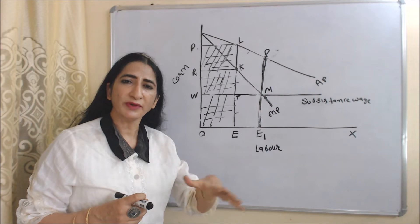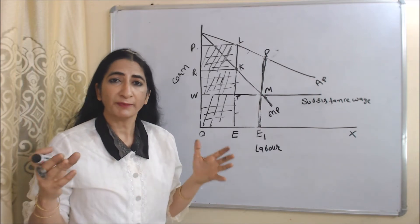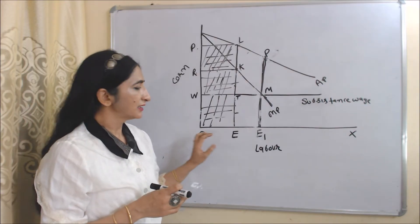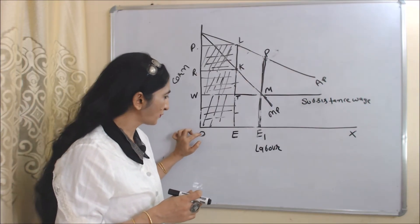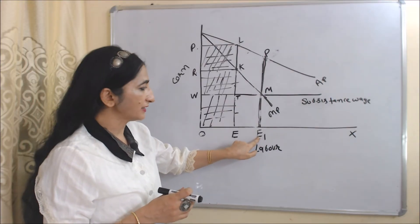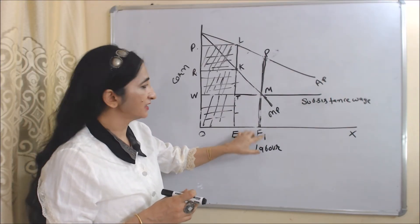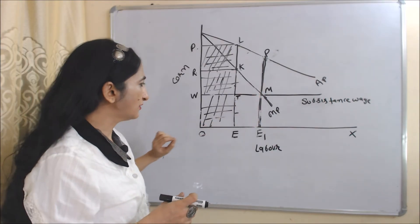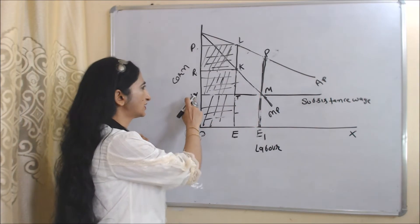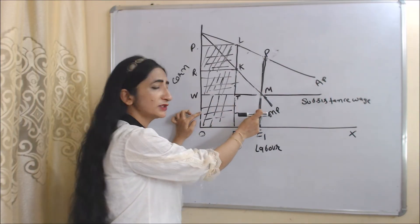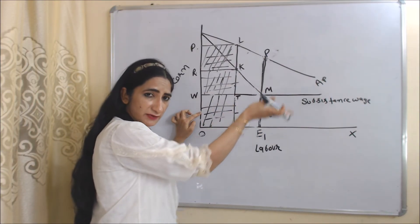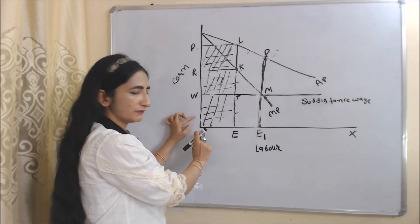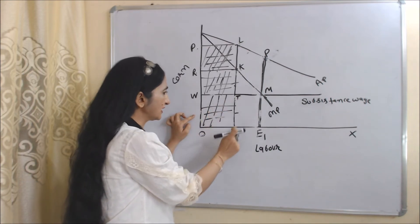But as economic development proceeds, our profit becomes zero. As economic development proceeds, labor supply increases from OE to OE1. At labor supply OE1, per unit wages is ME1, and the total wage bill equals the area O, W, M, E1 — this part represents the total wage bill as economic development proceeds, which is higher than earlier. Earlier, our total wage bill was O, W, T, E.